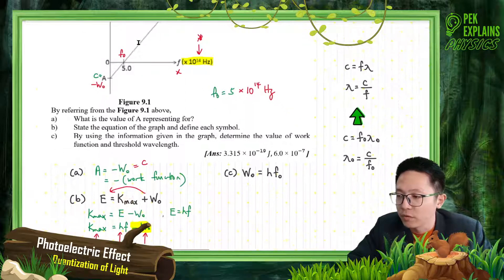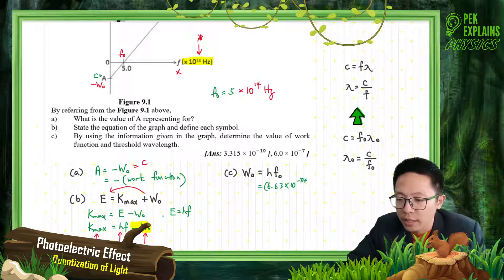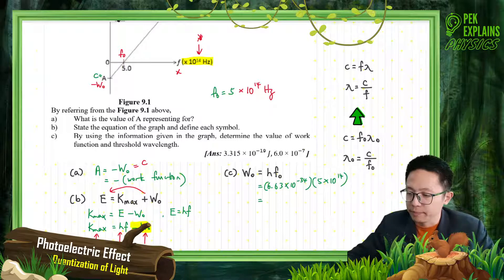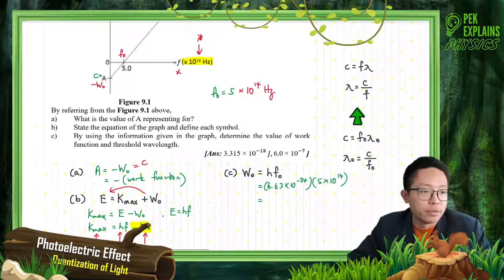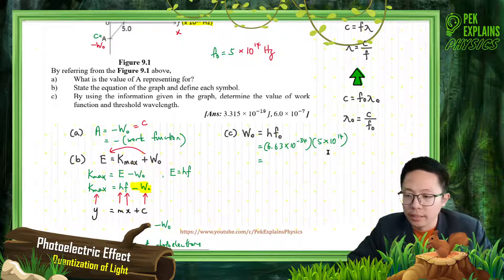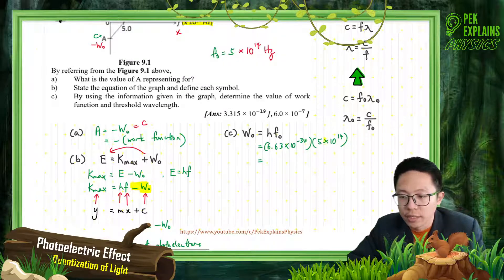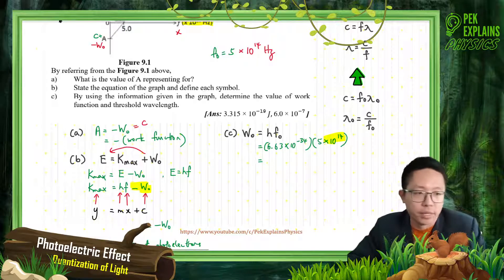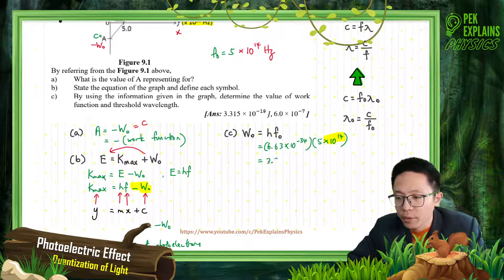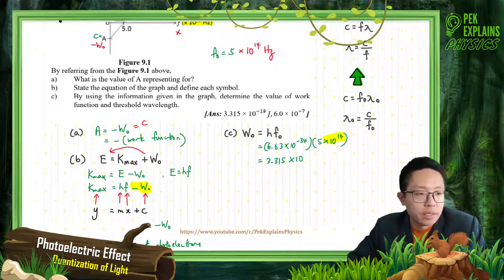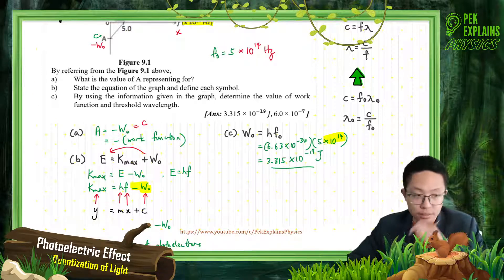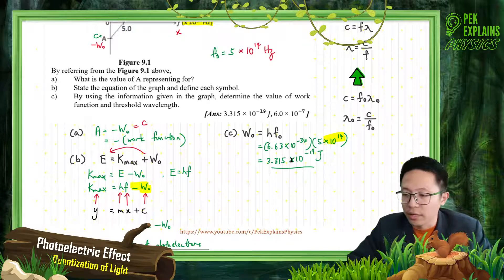Let's get the work function. W0 = H × F0. H is 6.63 × 10^-34 — you can get this value from your list of constants. And F0 is 5 × 10^14. Remember about the exponents — if you don't put the exponent there, you will surely get the wrong answer. So after multiplying, I got the answer 3.315 × 10^-19 joule. That's the work function.